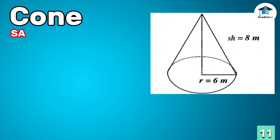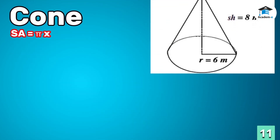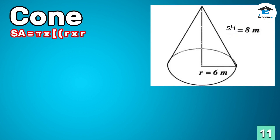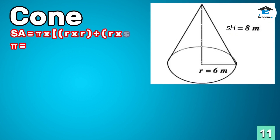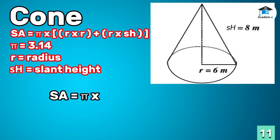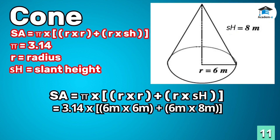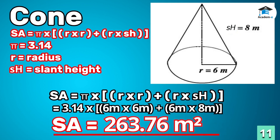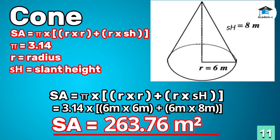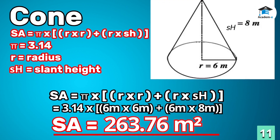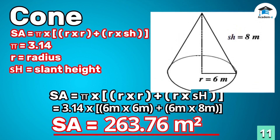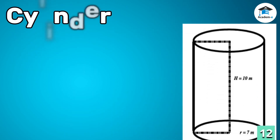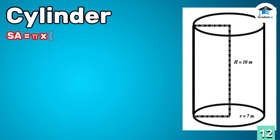Cone: to get the surface area of a cone, multiply the radius by itself, then add the product of radius and slant height, and finally multiply the answer by 3.14. Therefore, the surface area of the cone is 263.76 square meters.